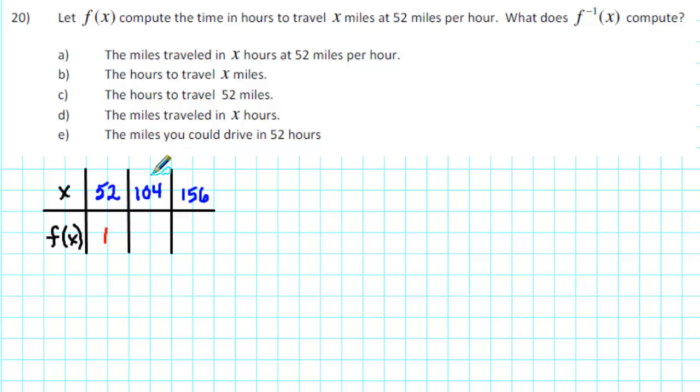For x equals 104 miles, we need to calculate the time that it takes to travel 104 miles at 52 miles per hour. Well, 104 is twice 52, so it will take 2 hours.